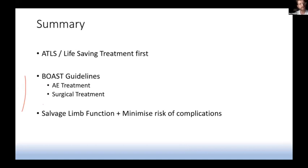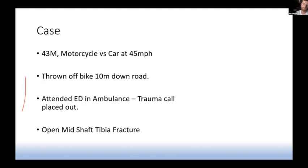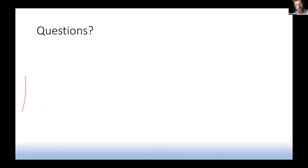In summary: first comes your life-saving ATLS treatment. After that, follow your BOAST guidelines — do your A&E treatment perfectly, then your surgical treatment. The aim is to salvage limb function and minimise the risk of complications. I was going to quickly talk through the case but I'm already running over, so I'll end it there. Any questions?